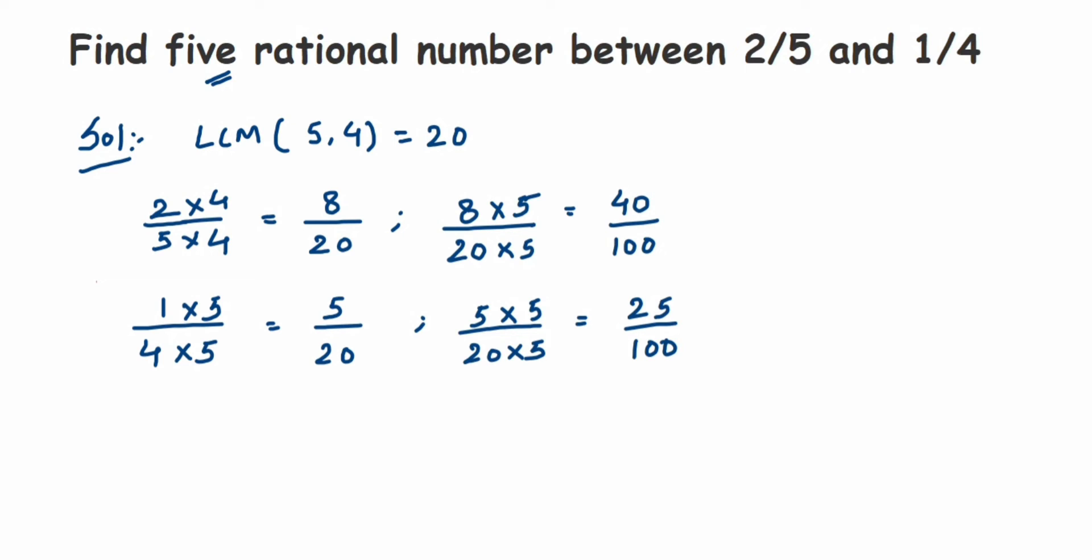So we can take any numbers here. We want only 5 rational numbers, so we can take any number between 25 to 40. Any 5. So therefore, 5 rational numbers...